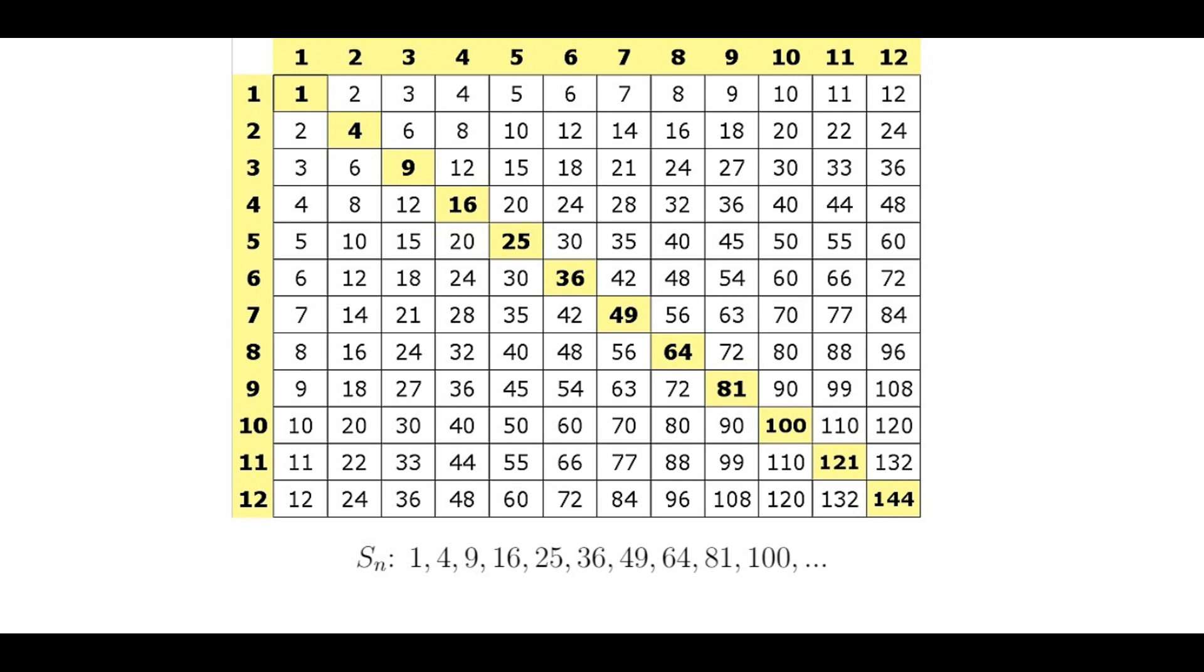In fact, every multiplication table contains a list of square numbers along the main diagonal. The square numbers up to 100 are listed below, and are probably very familiar to most of you.